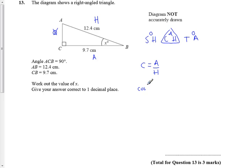we know that the cosine of X is equal to the adjacent, which is 9.7 centimeters, all divided by 12.4 centimeters.